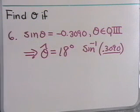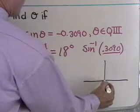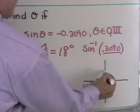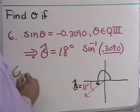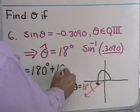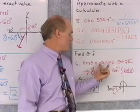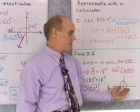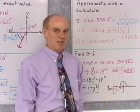Since theta terminates in quadrant 3, draw 18 degrees as the reference angle in quadrant three. The actual angle theta must be 180 degrees plus 18 degrees, which is 198 degrees. So if we want the angle whose sine is negative 0.3090 in quadrant 3, between 0 and 360 degrees, we use the reference angle theorem. Entering negative 0.3090 and using inverse sine directly gives negative 18 degrees, which terminates in quadrant 4 — that's incorrect.